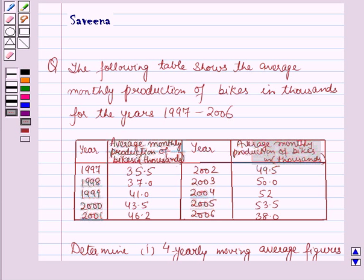Hello and welcome to the session. In this session, we will discuss a question which says that the following table shows the average monthly production of bikes in thousands for the years 1997 to 2006.